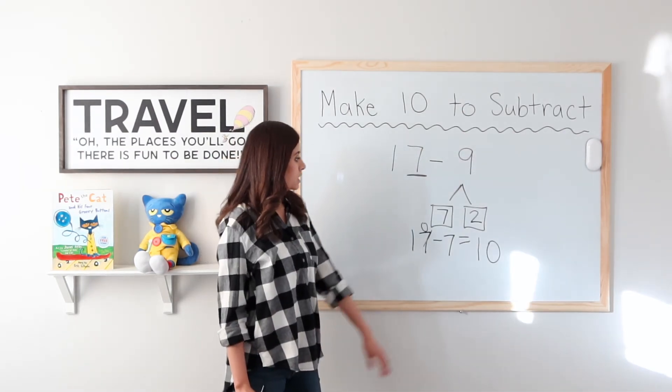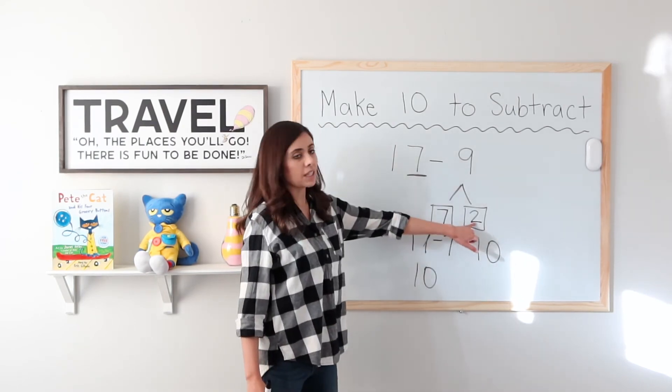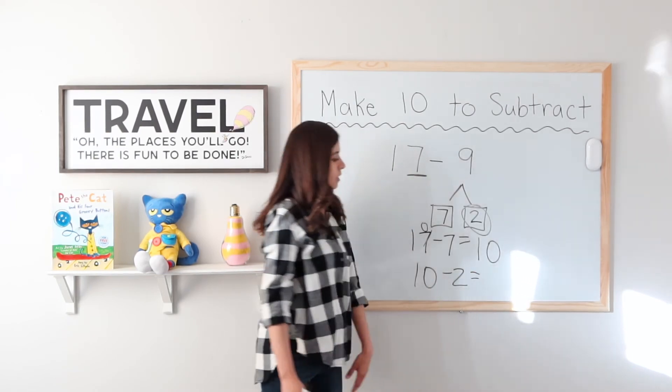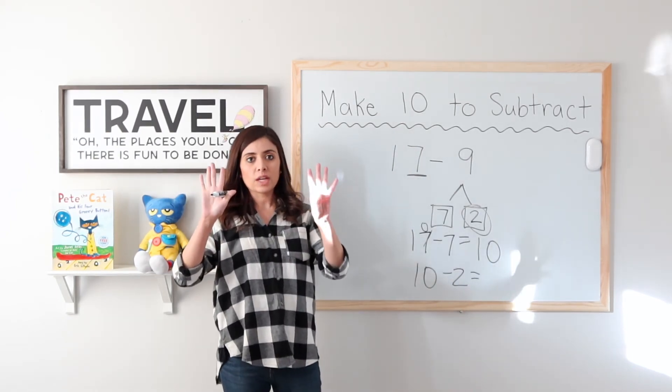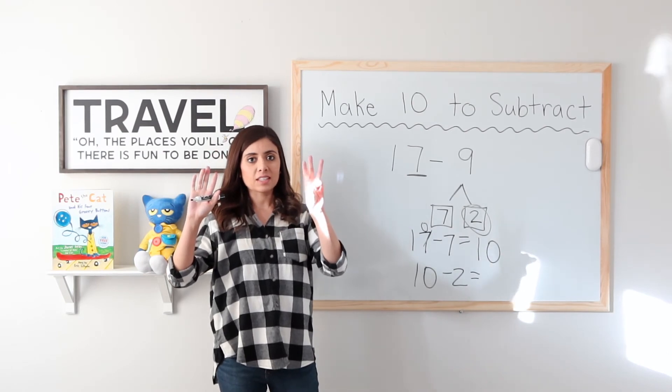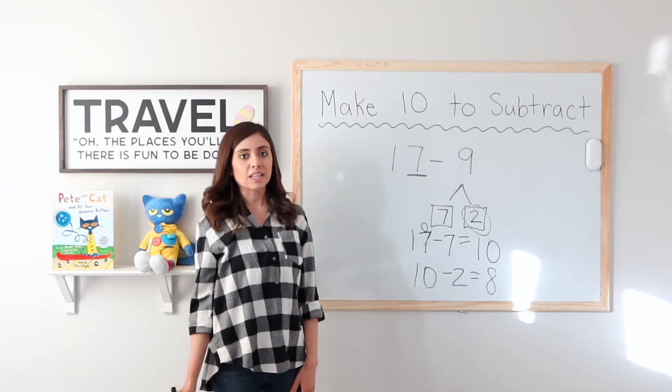Step 3. Take your answer, 10, and subtract the second part, which is 2. 10 minus 2, 1, 2. That's 5, 6, 7, 8. 10 minus 2 equals 8.